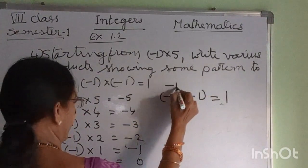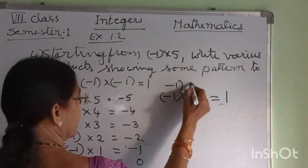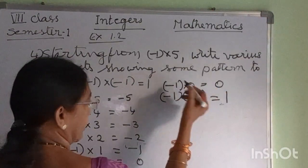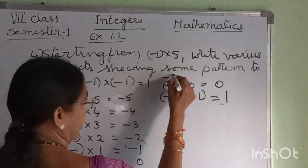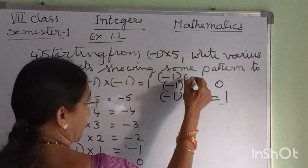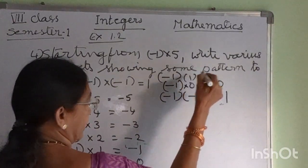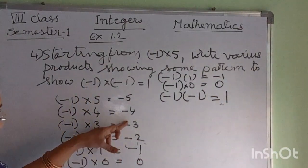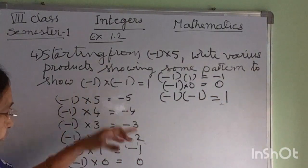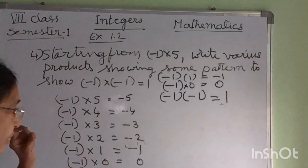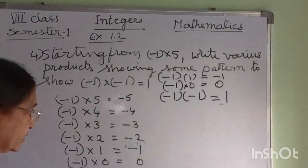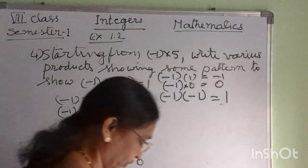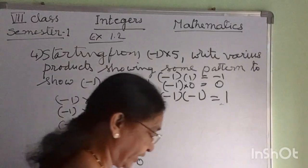In this pattern, the products increase by 1 each time: minus 5, minus 4, minus 3, minus 2, minus 1, 0, 1. The previous product is minus 1 into 0 equals 0, then above is minus 1 into 1 equals minus 1, and so on. Following this pattern, minus 1 into minus 1 equals plus 1, which demonstrates that the product of two negative numbers is positive.